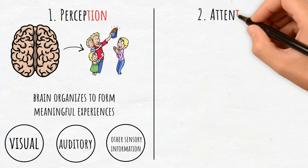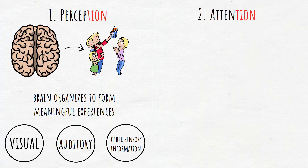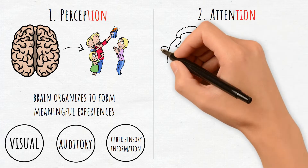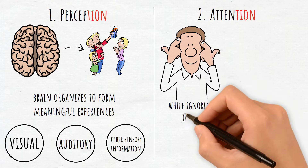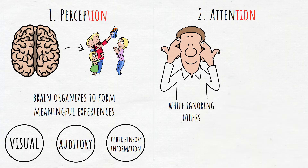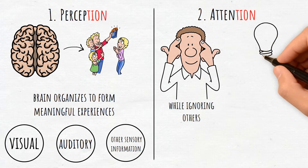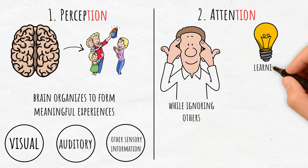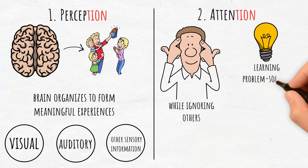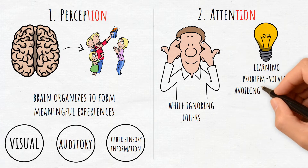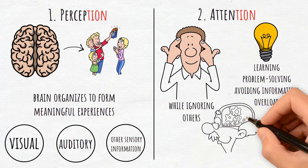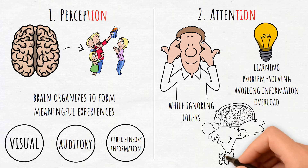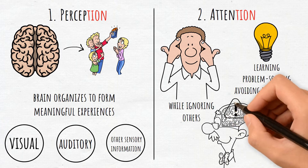2. Attention. Attention is the ability to focus cognitive resources on specific stimuli while ignoring others. This selective process is vital for tasks like learning, problem-solving, and avoiding information overload. Limited in capacity, attention can be divided or focused, impacting performance.